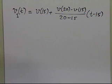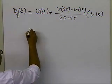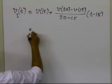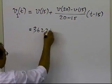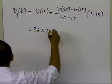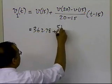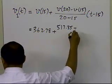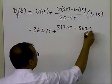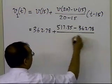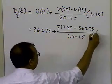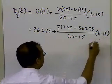So v-sub-15 is how much, 362.78, plus v-sub-20 is 517.35, velocity at 15 is 362.78, divided by 20 minus 15, times t minus 15.